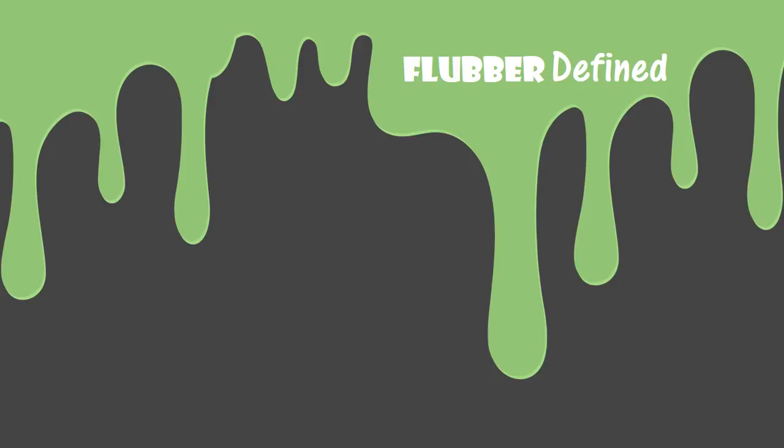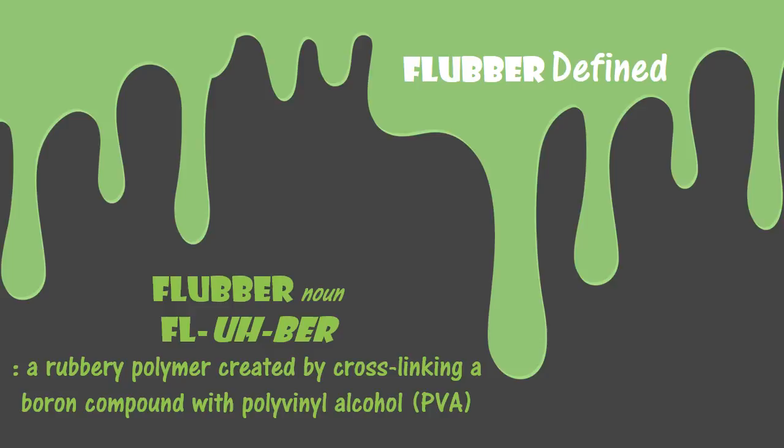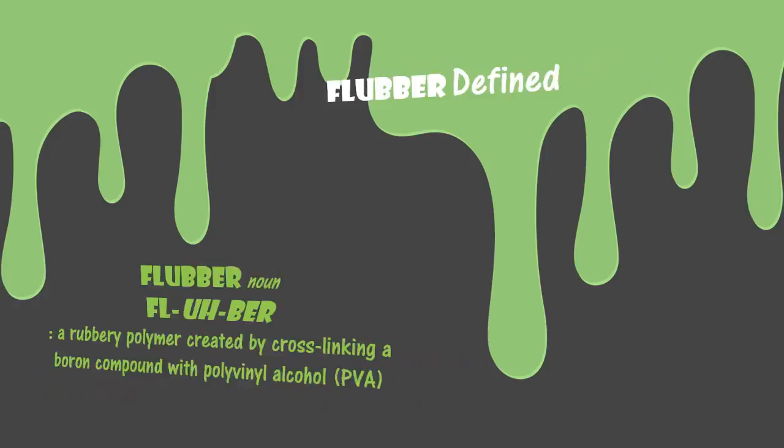Let's define flubber. It's not really a word — well, it is a word, it means like flabby — but that's not how we're using it here because we're actually making something. Flubber is a rubbery polymer that is created by cross-linking a boron compound with polyvinyl alcohol.